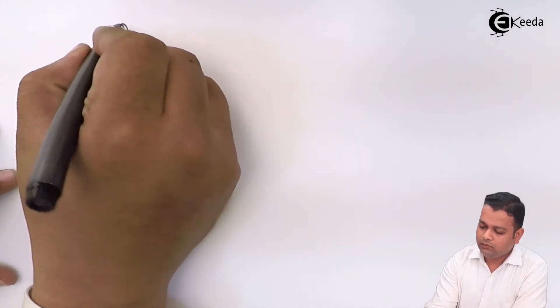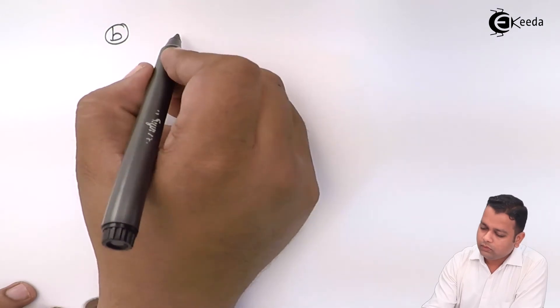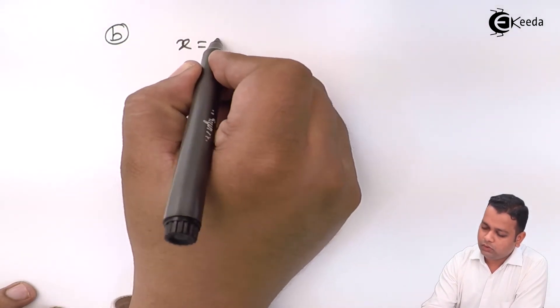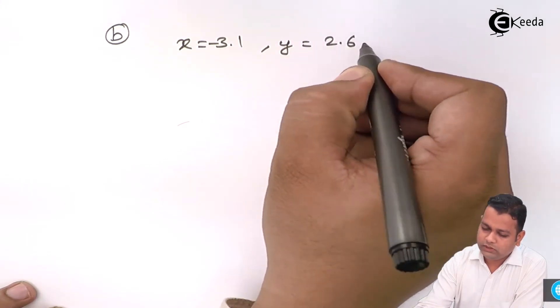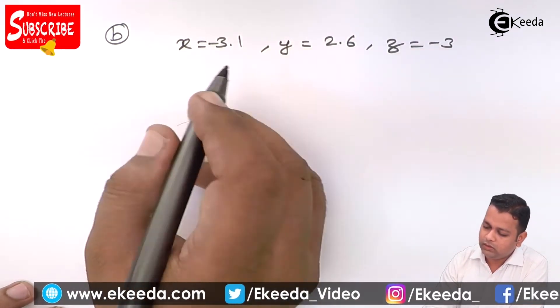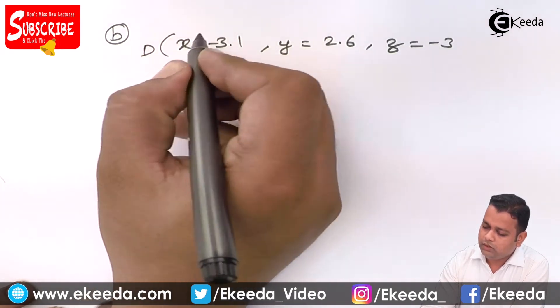So, in part B, x is equal to minus 3.1, y is equal to 2.6, z is equal to minus 3 for the point D.